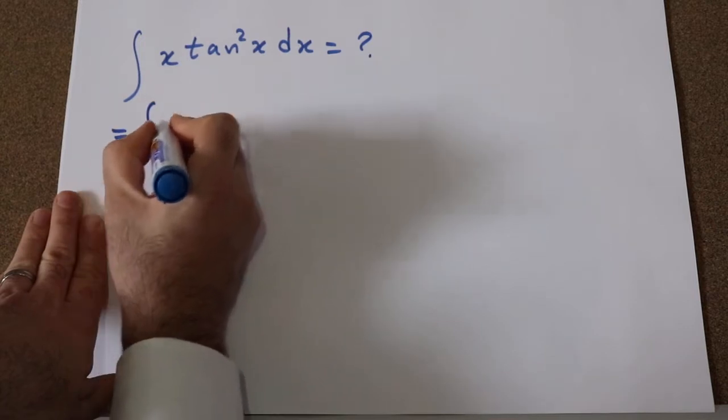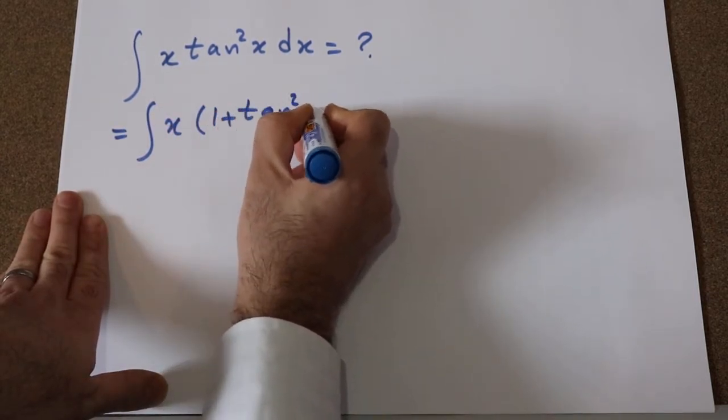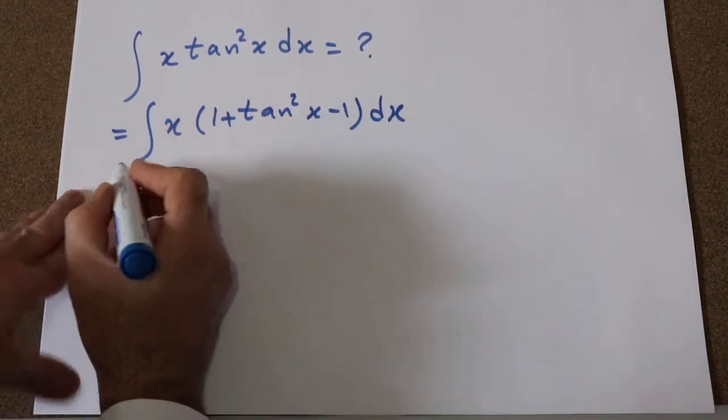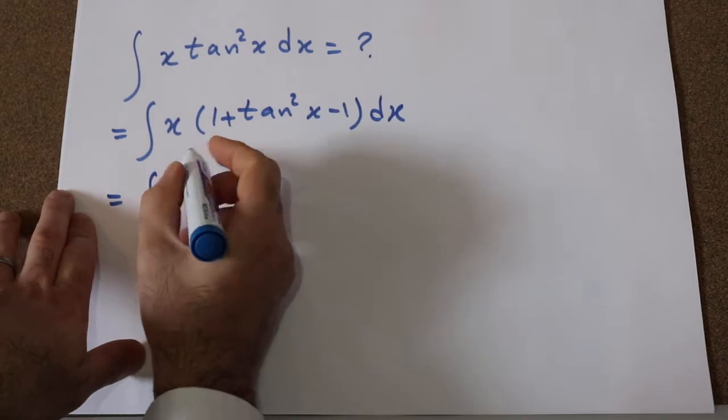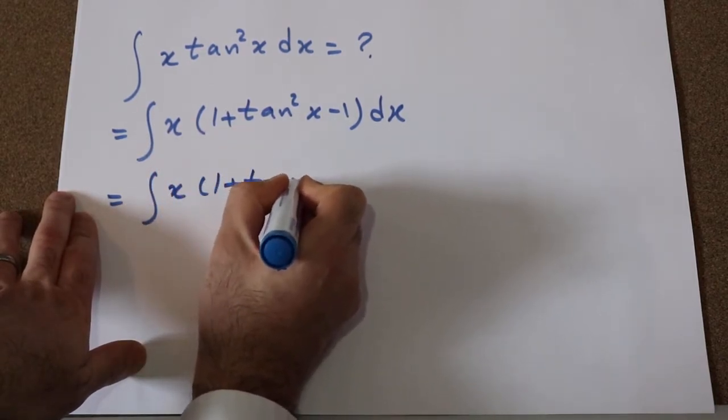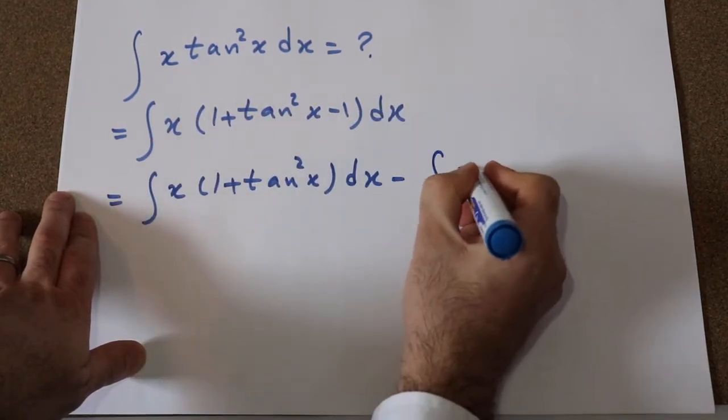You can rewrite this integral as x times (1 plus tangent square x minus 1) dx. And now you can expand this integral as integral of x times (1 plus tangent square x) dx minus x times 1, that is x dx.